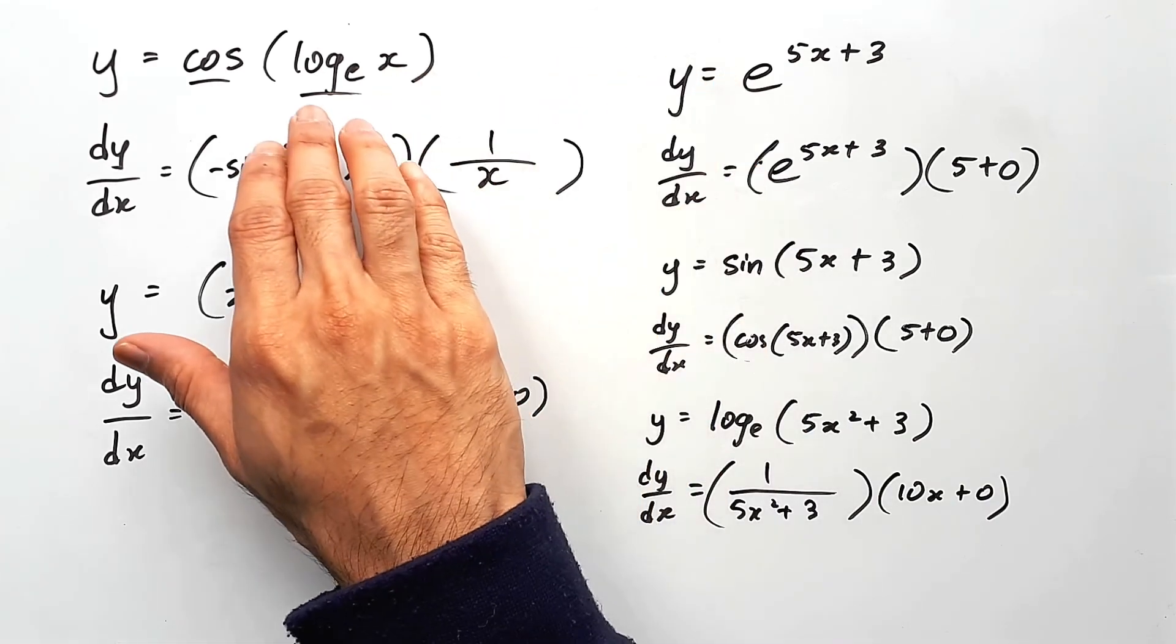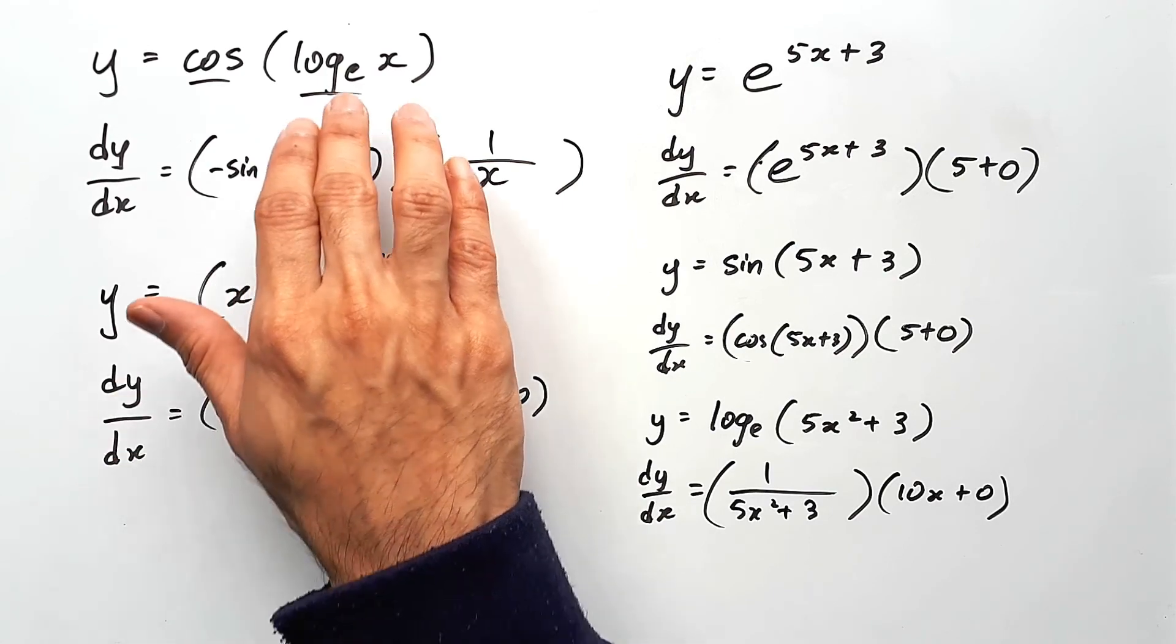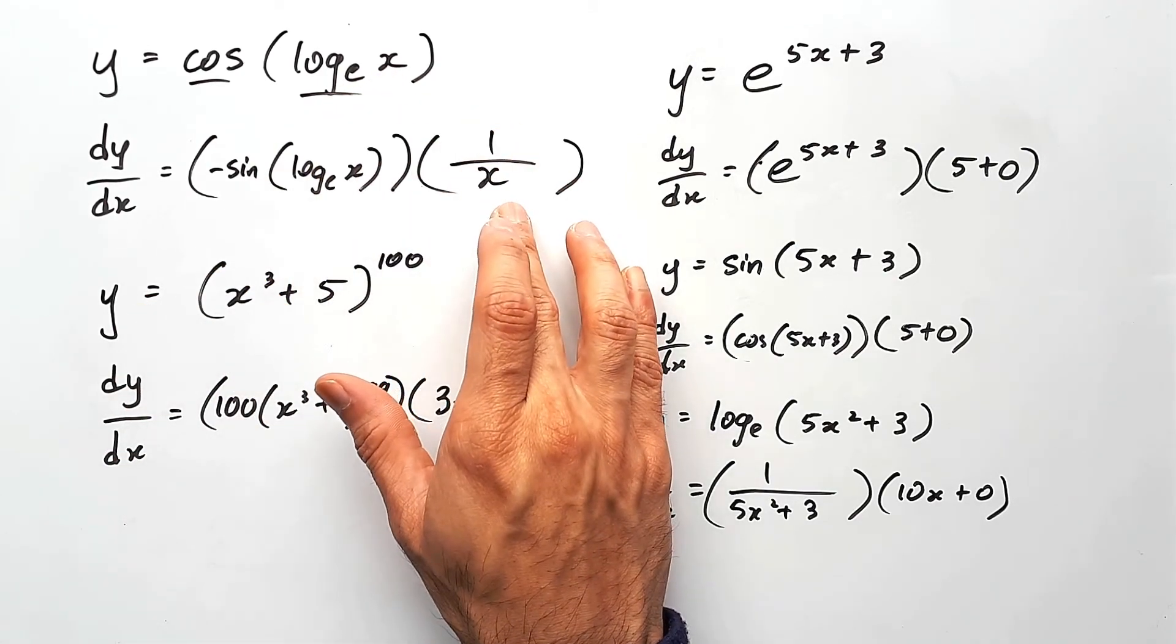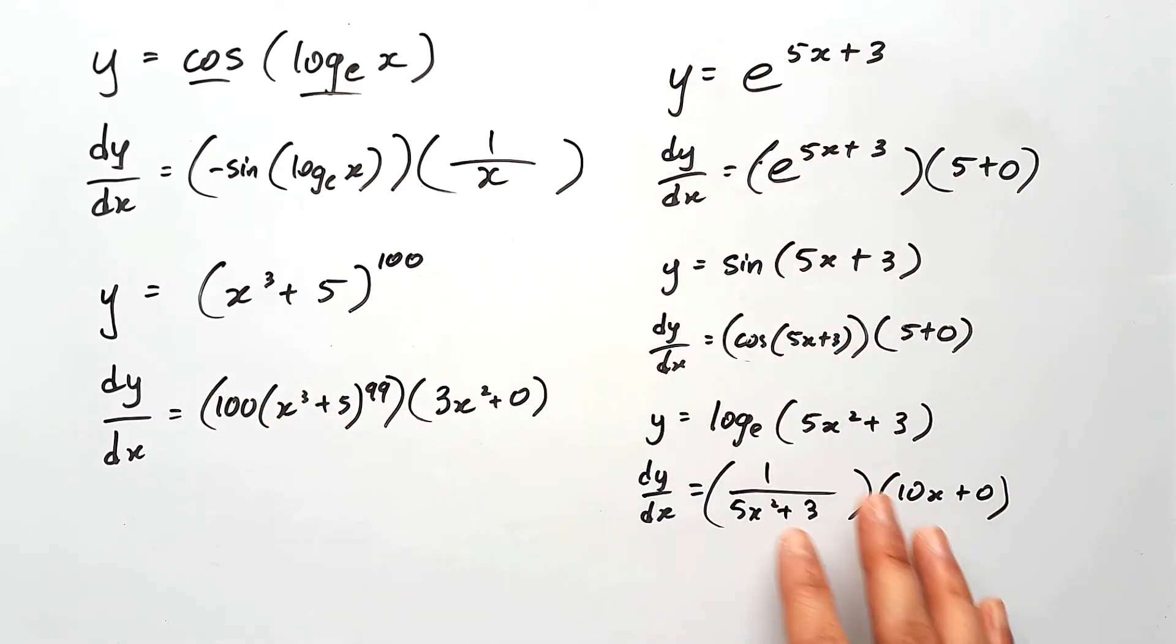So with all of these questions that I just did, it was the same thing. You have the outside differentiated first, copying the inside in, and then you have the inside being brought over to the next one as an inner derivative. And this is the same pattern you can see throughout all of them.